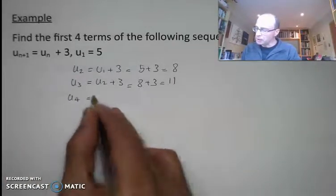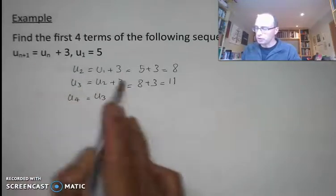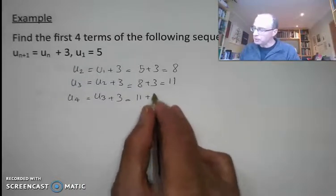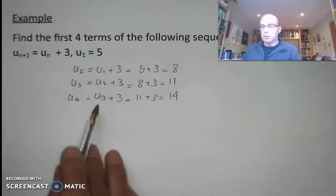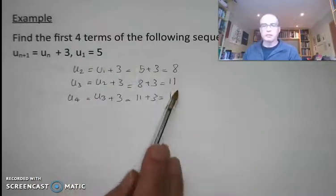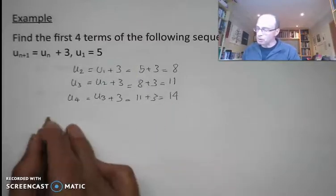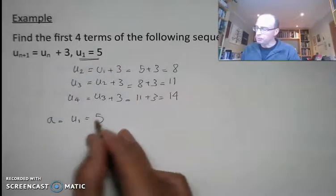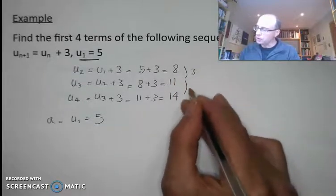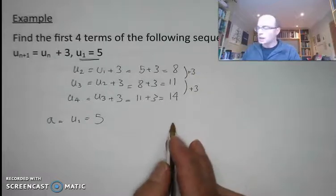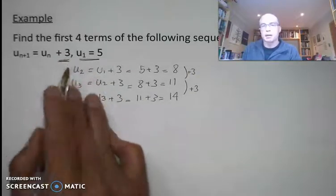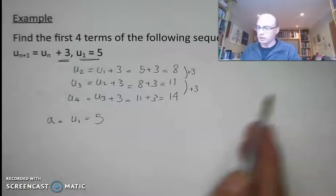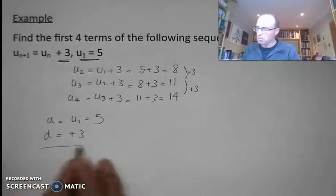The fourth term u4 is equal to u3 plus 3. U3 is 11, so 11 plus 3 equals 14. So we've got the first four terms: 5, 8, 11, and 14. This is an arithmetic sequence — the starting value u1 is 5, and the common difference is 3, since we're adding 3 to get from one term to the next. So my common difference equals plus 3.